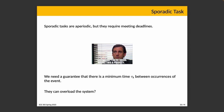Sporadic tasks are aperiodic but do require meeting their deadlines, and there is a minimum time τ_k between occurrences. However, sporadic tasks can still overload the system — if there are too many, we must decide what to schedule and what will miss its deadline. There aren't strong rules saying an aperiodic task always takes priority over a sporadic one. If something is going to miss its deadline, we likely don't bother scheduling it.